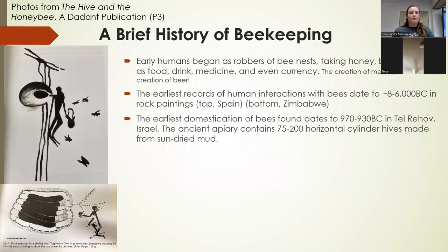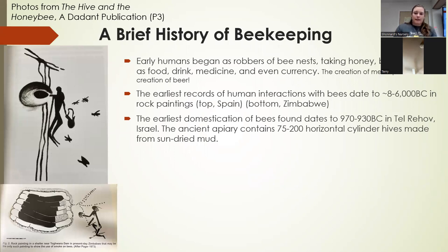Let's get into a brief history of beekeeping. Early humans — really early — began as robbers of bee nests. They would basically do a destruction harvest: they would take honey, they would take brood, and they would use it as food, drink like mead, medicine, and even currency.